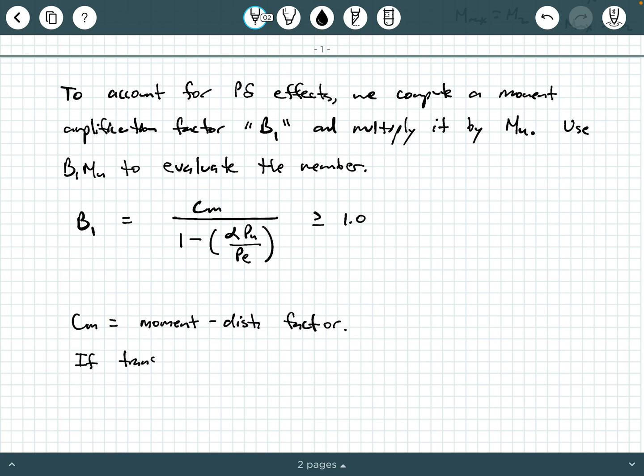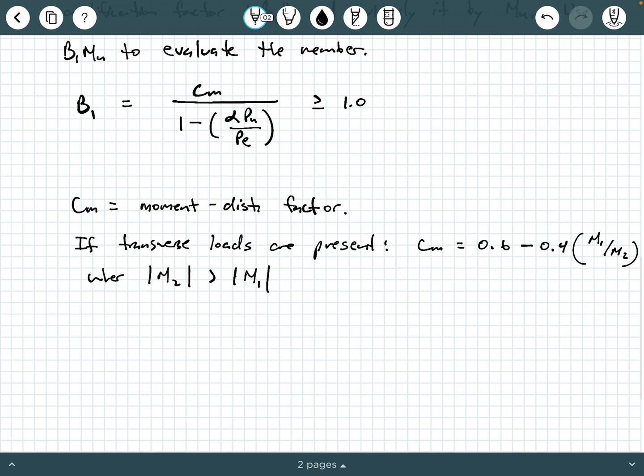If transverse loads are not present, then we say CM is equal to 0.6 minus 0.4 M1 over M2, where the absolute value of M2 is bigger than the absolute value of M1. So M2 has the larger magnitude than M1. If transverse loads are present, then you take CM equal to 1.0. So that takes care of the CM factor.